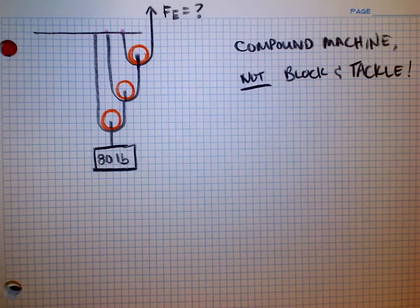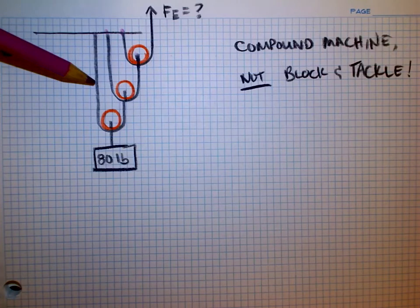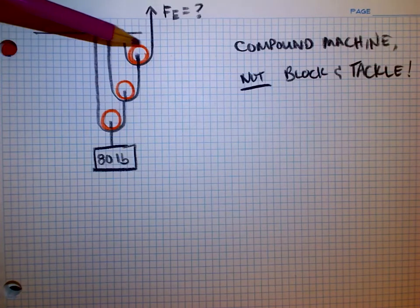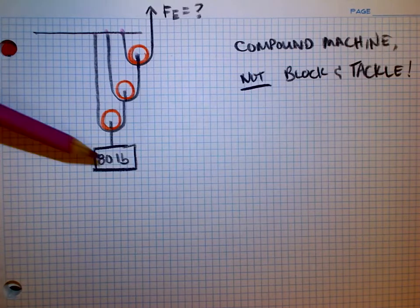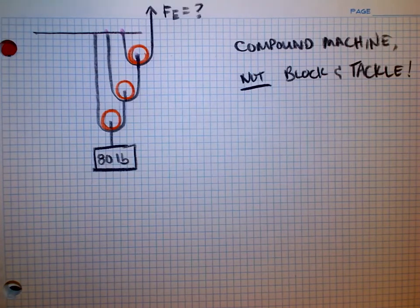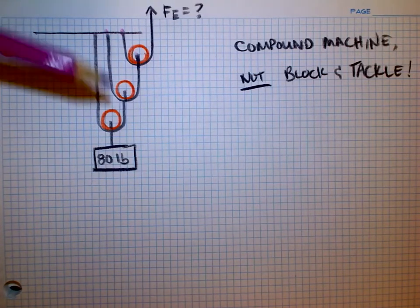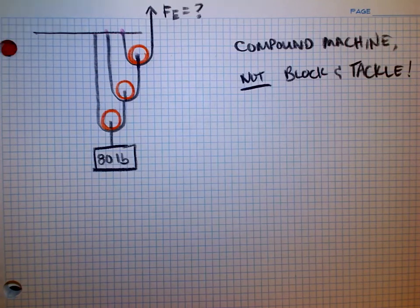A block and tackle has a single rope, not multiple. So how do we treat this problem? Is it different? Because if there's a block and tackle I would simply go one, two, three, four, five, six upward arrows. I have a mechanical advantage of six right, compared to the downward force. But this is different. This is a compound machine.